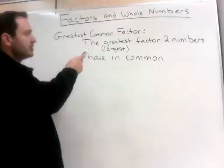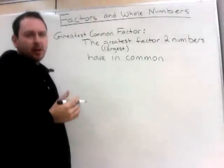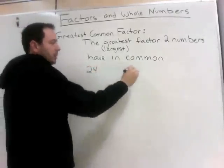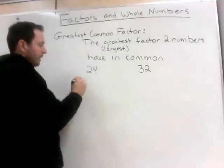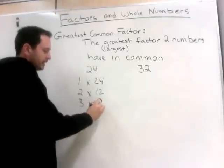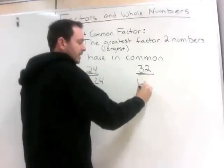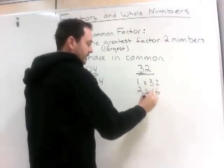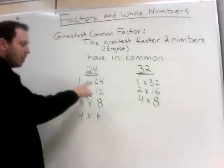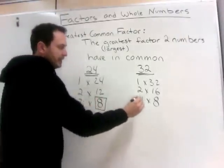Now we're going to look at greatest common factor — the largest factor that two numbers have in common. One way to do this is to find all of the factors, the times tables that make up the numbers. For example, the factors of 24 are 1 times 24, 2 times 12, 3 times 8, and 4 times 6. The factors of 32 are 1 times 32, 2 times 16, and 4 times 8. The greatest one they have in common is the number 8.